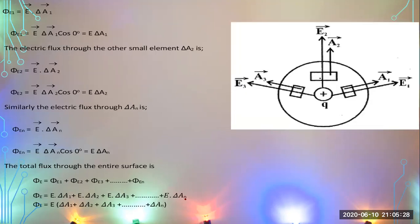Looking at the diagram, the plus q charge has electric lines of force moving outward in all directions, perpendicular to the surface. The electric lines of force and the area vector for del a1 are along the same direction — both pointing outward. Similarly for del a2, both the area and electric lines of force are moving in the outward direction. The same applies to del a3 and its electric field intensity — they are along the same direction.